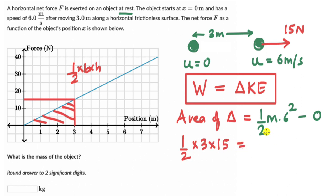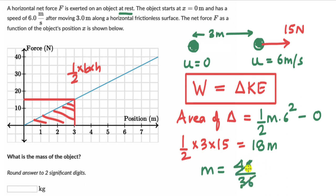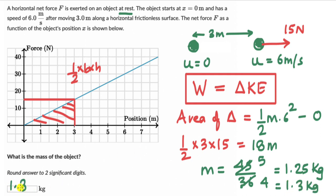Working this out: half × 3 × 50 = 75, and the right side equals 18m. So 75 = 18m. Wait — 15 × 3 = 45, divided by 36. This is 45/36, which simplifies (both multiples of 9) to 5/4, giving m = 1.25 kilograms. Rounding to two significant digits, the mass of the object is 1.3 kilograms.